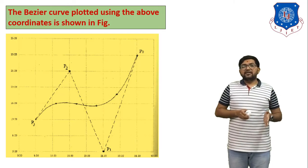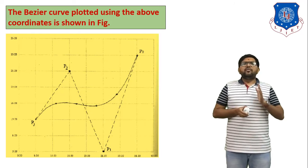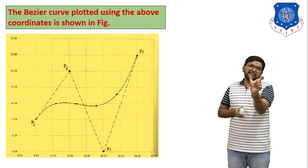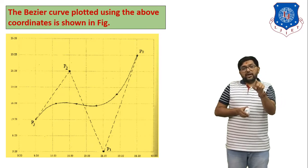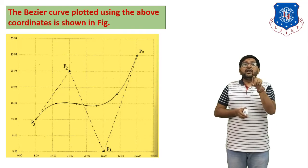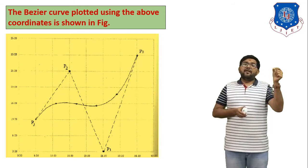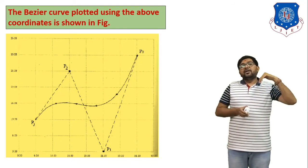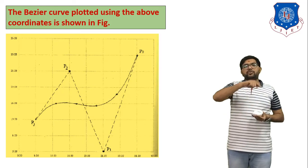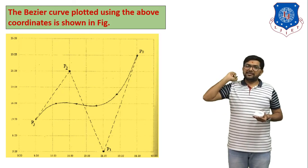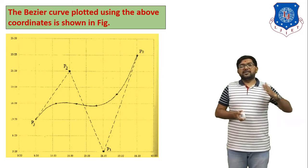In today's session we solved one numerical based on Bezier curves. In any Bezier curve problem, first identify how many control points there are — if there are 4, then n = 3. Find the equations for P(u)x and P(u)y, substitute different values of u, plot and join the points freehand to get the final curve. In the next session we will discuss various surfaces, like analytical surfaces and synthetic surfaces. Thank you.